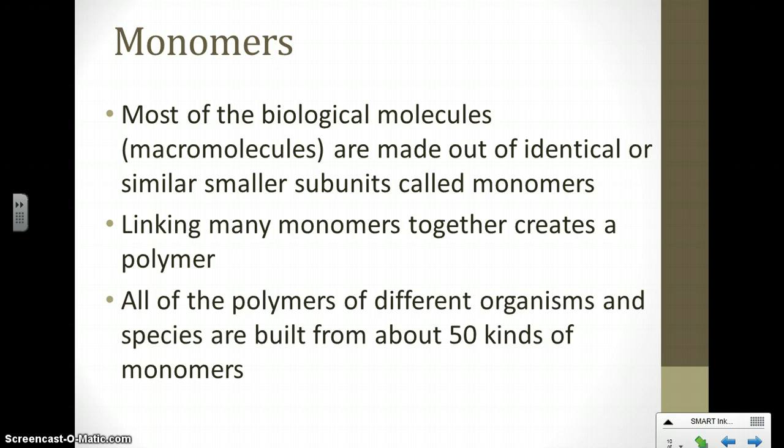In life, about 50 different kinds of monomers help to come together to create all of the functioning polymers that are used by all of the different species of the world.